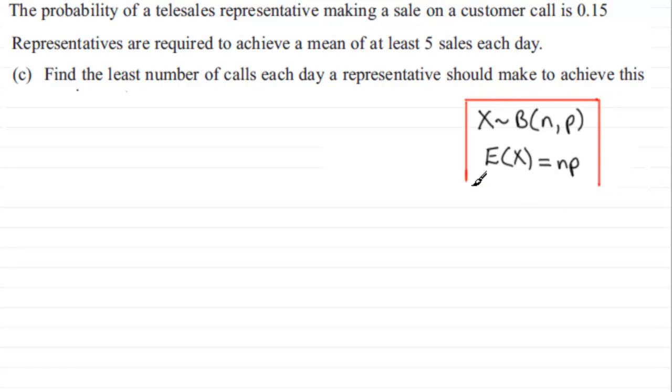So on the basis of this we can say that since the mean E(X) is equal to np, we therefore know that that mean np has got to be at least 5, so it's got to be greater than or equal to 5.